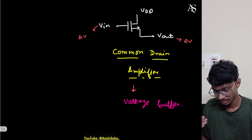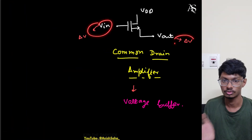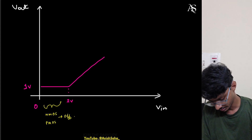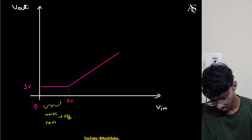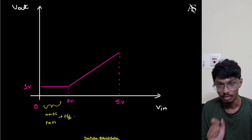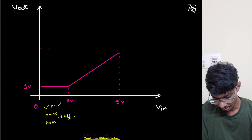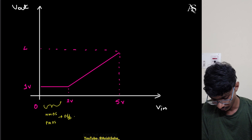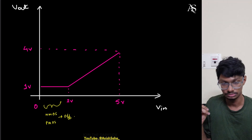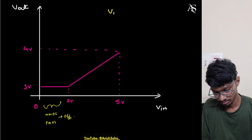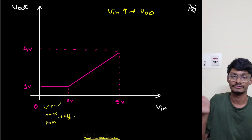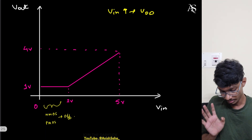On the graph, the slope in this region is one. As Vin goes from two to five volts (Vdd), Vout increases with slope one from one volt up to four volts (Vdd minus Vtn). Now let's look at what happens when the input starts decreasing.